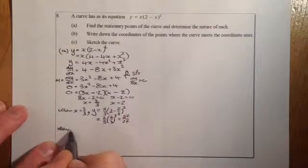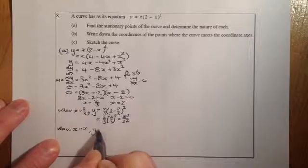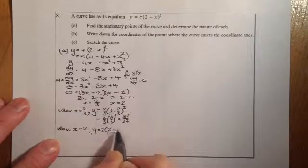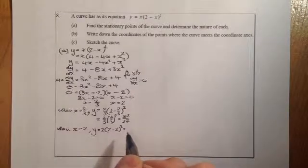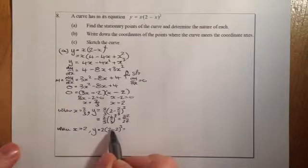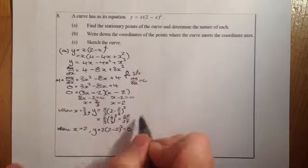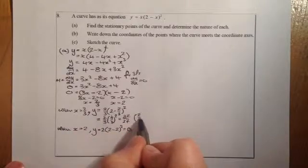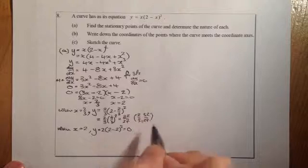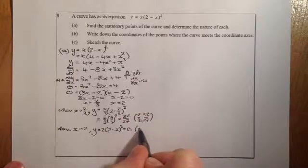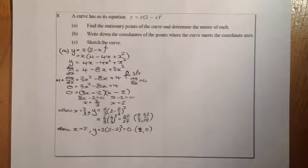When x equals 2, I substitute in: y equals 2 times (2 minus 2) squared. That's 2 times 0 squared, which is 0. So the coordinate is (2, 0). So my two stationary point coordinates are (2/3, 32/27) and (2, 0).